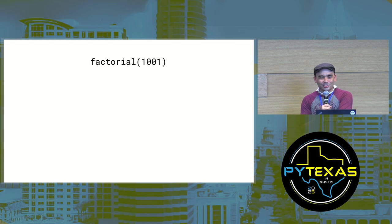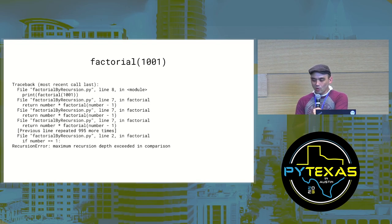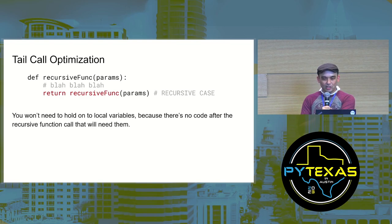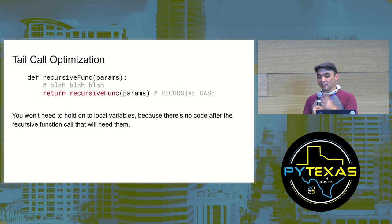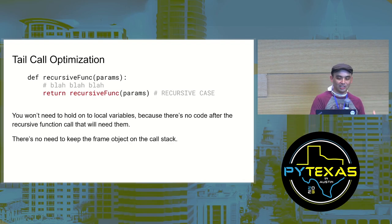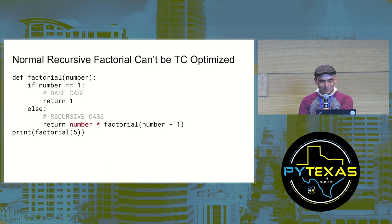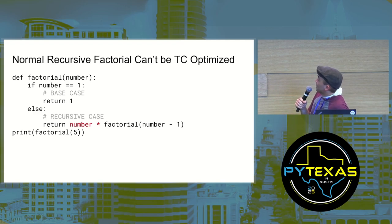Otherwise, you should not use recursion. Here's a problem with recursive factorial: if you try to calculate the factorial of 1001, you'll get a stack overflow because it needs more than 1000 function calls. There is a workaround called tail call optimization — the Python interpreter can prevent stack overflows if the recursive call is the last thing in the function. If there's no code after the recursive call, you don't have to keep the local variables or the frame object, so you can pop it off the stack early and the call stack doesn't grow.